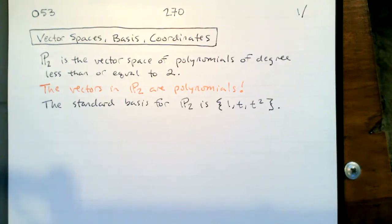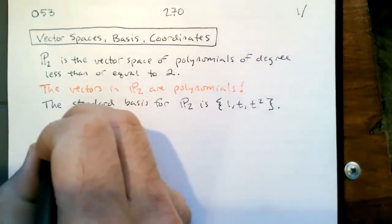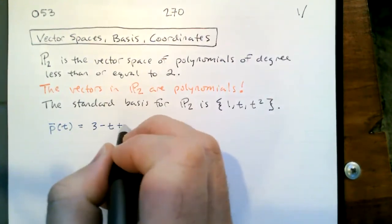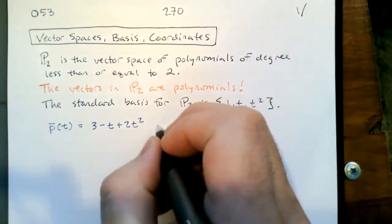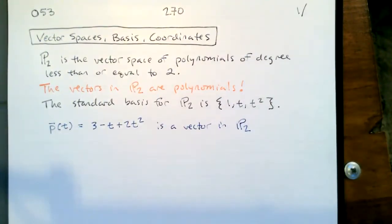For example, a vector in P2 would be p. And to emphasize — even though I'm just using a lowercase p with a bar over it, which would be boldface if I was typing — I'm using my normal naming strategy for vectors, boldface or a line over it. But to emphasize that we're dealing with a polynomial vector, I'm going to say p of t. So I'll say p(t) is equal to 3 minus t plus 2t squared.